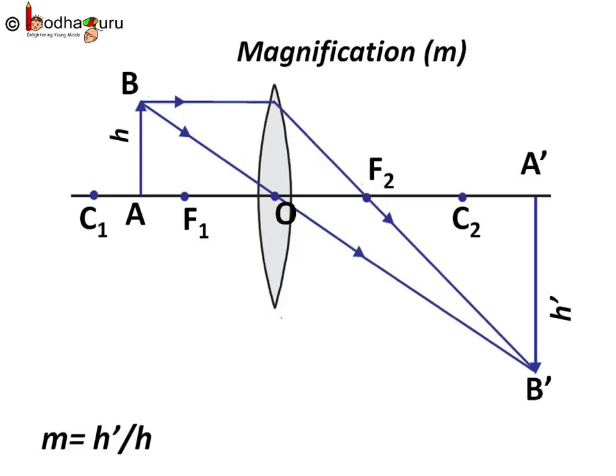Let us say H is the height of the object and H' is the height of the image formed by the lens.